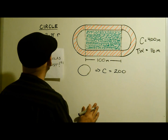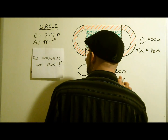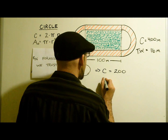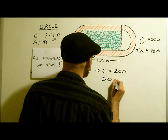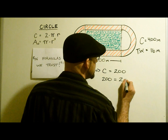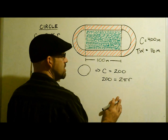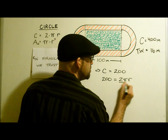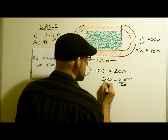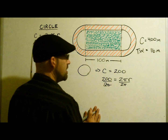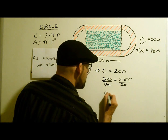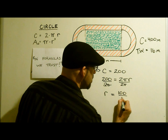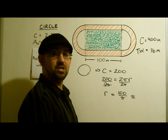Now we can go to our formula bank and plug in C, because we know what C is. We don't know what the radius is, but I'm sure we'll find it out. So now we know that 200 equals 2 times pi times r. We know everything except for the r. So if we divide by 2 pi on both sides, we get r, the radius, equal to 100 over pi. An estimated value is 31.84.